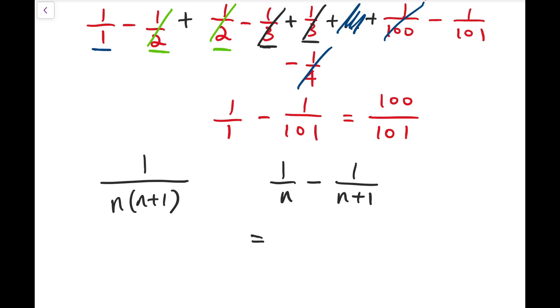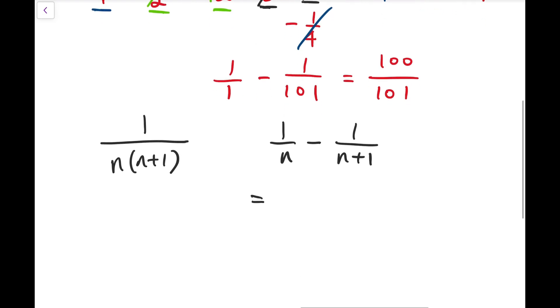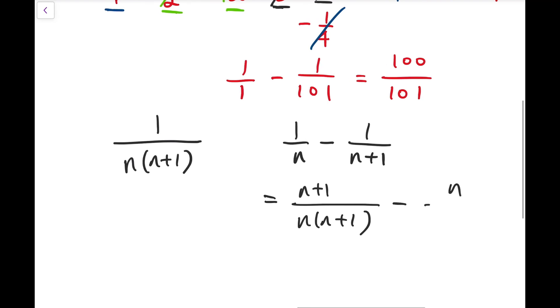Now indeed, if I try to take a common denominator on the difference of these two fractions, I have n times (n+1). Now for the numerator, it becomes (n+1) minus n.